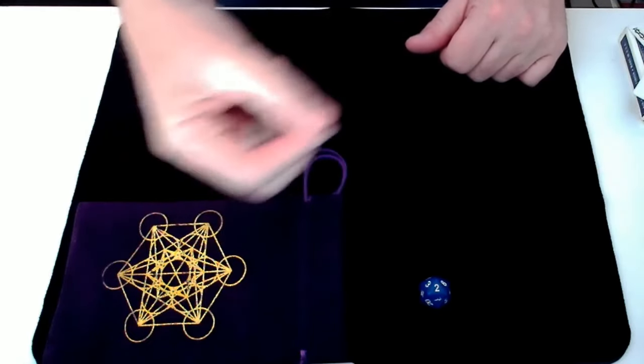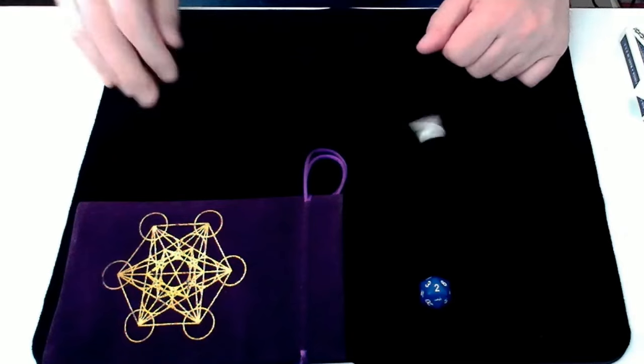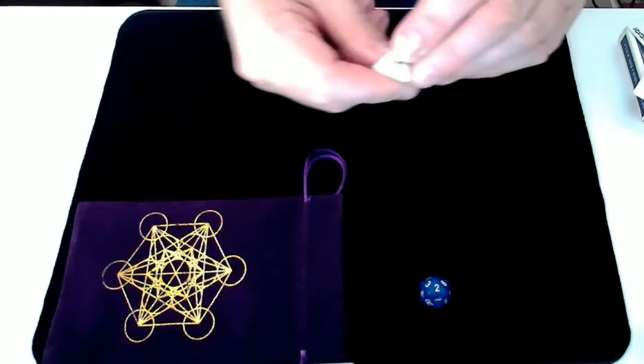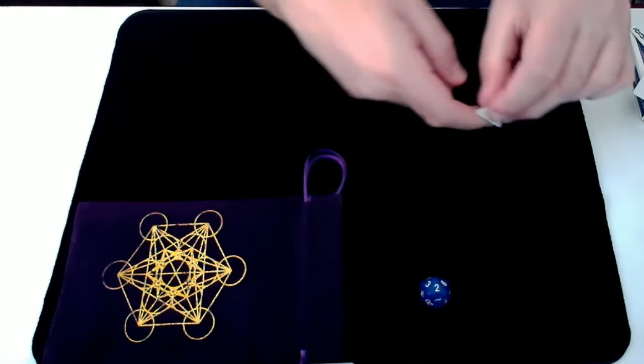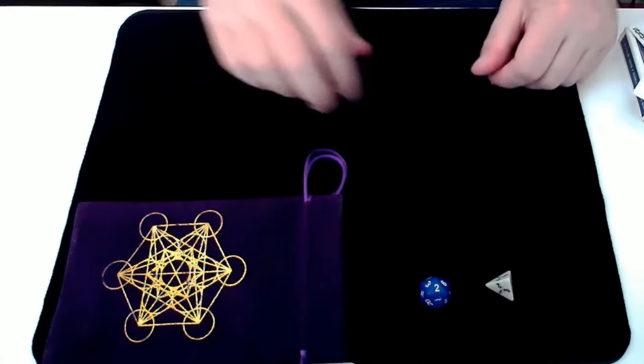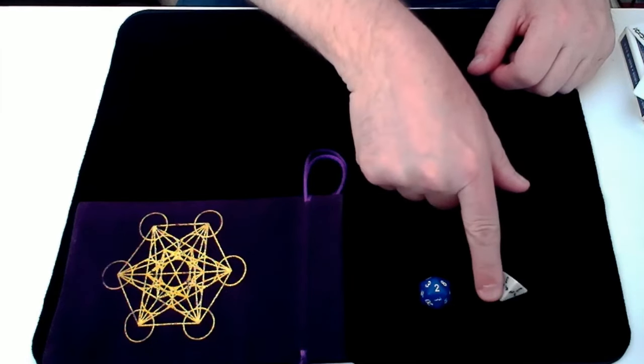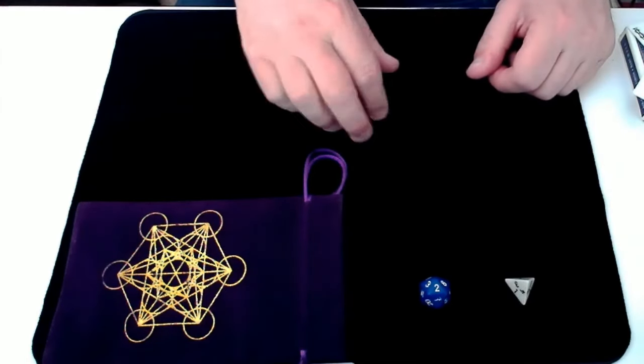So clubs, hearts, spades, diamonds. And we have thrown a 1. Let me just show you, that is clubs. So 2 of clubs is our randomly selected card that you could have chosen. 2 of clubs.